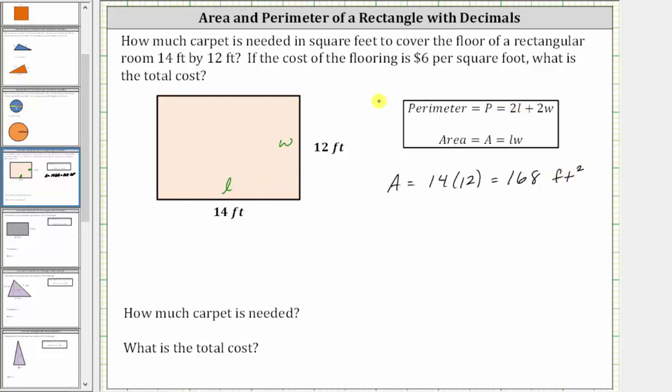But we're also asked to determine the total cost where each square foot costs $6. And since the area is 168 square feet, the total cost C is going to be equal to $6 times 168. Let's go ahead and find this product. Let's change the order and determine 168 times six.